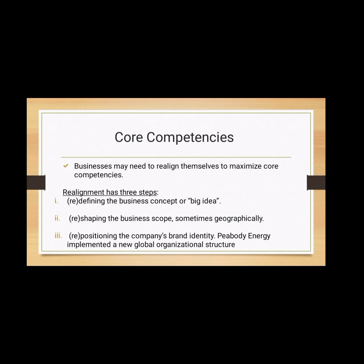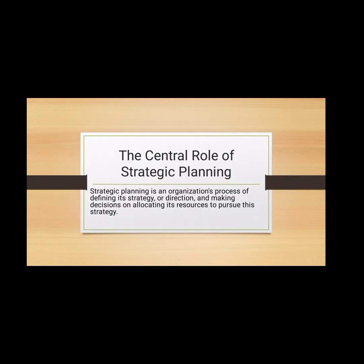As Panasonic and other Japanese technology and electronics companies found, realignment has three steps: first, redefining the business concept; second, reshaping the business scope (sometimes geographically); and third, repositioning the company's brand identity. The purpose of strategic planning is to set overall goals for your business and to develop a plan to achieve them. It involves stepping back from your day-to-day operations and asking where your business is headed and what its priorities should be.